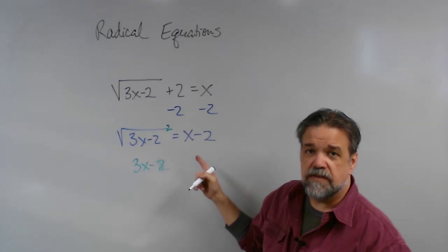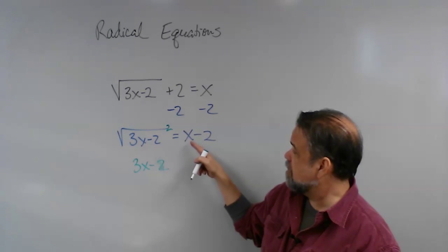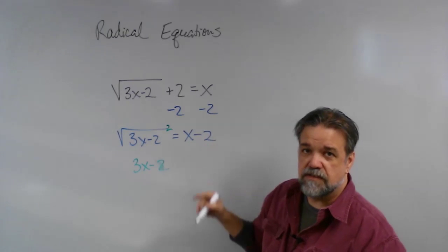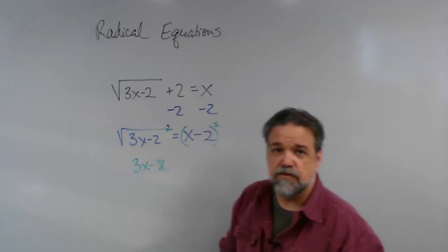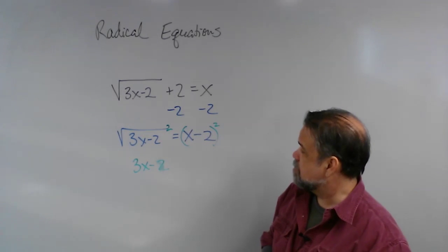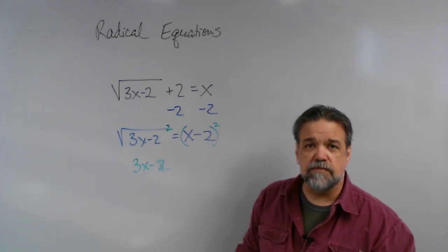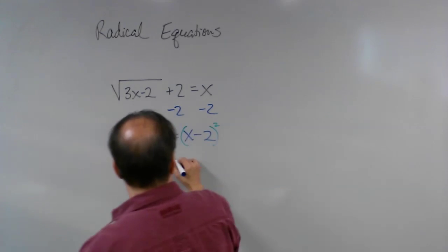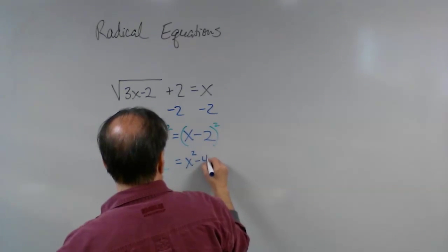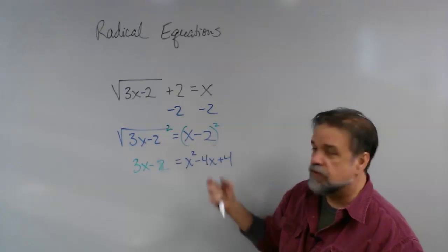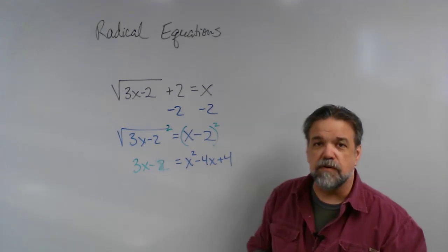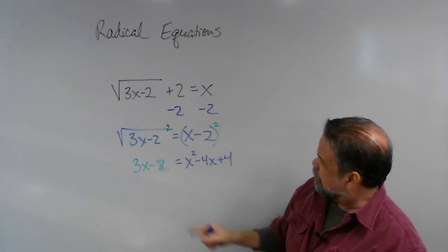I'm just basically getting rid of the square root. Over here when I square this, don't just say this thing squared minus this thing squared. Oh no, you have to square the quantity, you have to square the whole thing. So what's x minus 2 times x minus 2? It's x squared minus 4x plus 4.